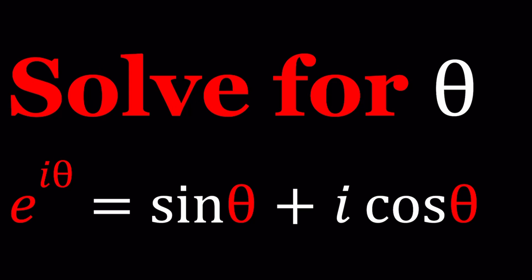We have e to the power i theta equals sine theta plus i cosine theta, and we're going to be solving for theta because that's the only unknown.